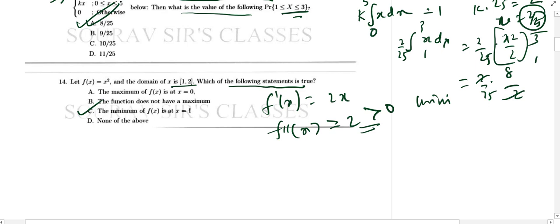So minimum value. You just put it. And this is equal to 1. So from 1 to 2. So this happens to be at 1. So 14 is. B is the answer. Next one.